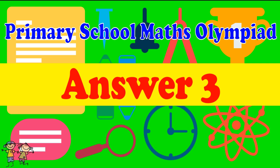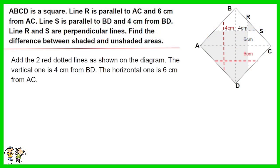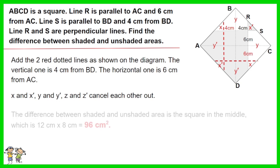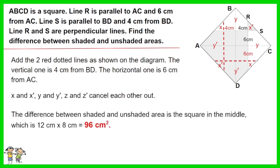Answer for Question 3. Add two red dotted lines as shown on the diagram — the vertical one is 4 cm from BD, and the horizontal one is 6 cm from AC. Notice that X and X', Y and Y' cancel, and Z and Z' cancel each other out. The difference between the shaded and unshaded area is the square in the middle, which is 12 cm times 8 cm. The answer is 96 cm².